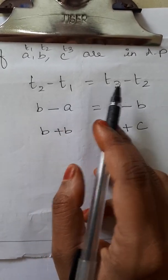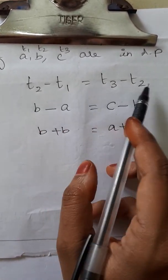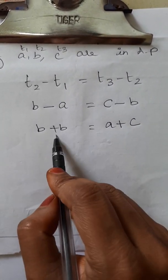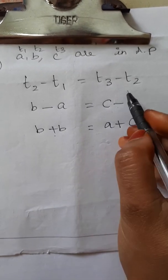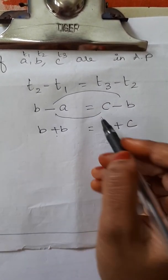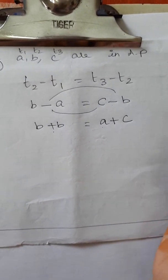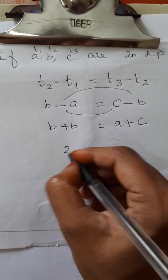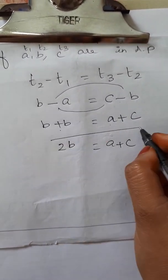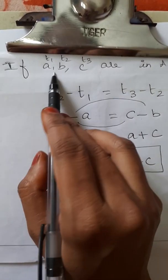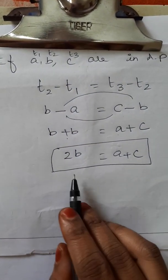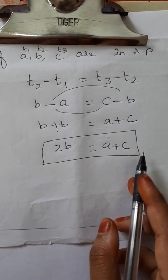Substituting the values: T2 minus T1 equals T3 minus T2 gives us 2B equals A plus C. This is the condition for three numbers A, B, C to be in AP.